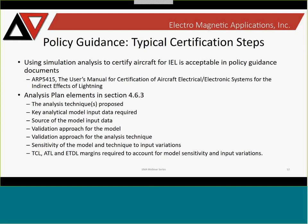In the policy guidance material, there are typical certification steps an aircraft manufacturer must go through. In ARP 5415, the user's manual for certification of aircraft electrical/electronic systems for indirect effects of lightning, it states that you can use simulation analysis to certify an aircraft. It outlines an analysis plan with elements that should be included in your certification process. By creating high-fidelity simulation models, you can analyze your entire system — and that's what we're proposing.